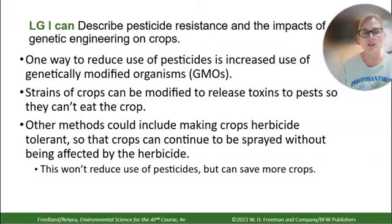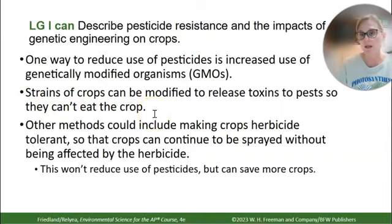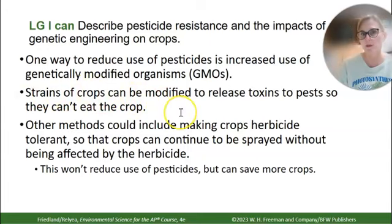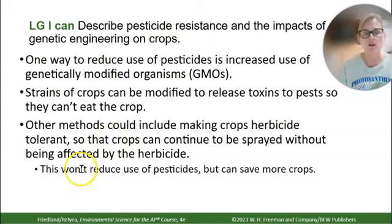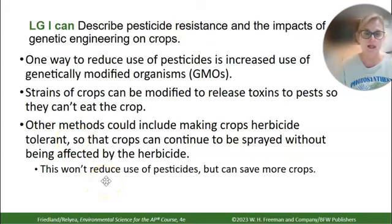One way to reduce pesticide use is through genetically modified organisms. Genes conferring pest resistance can be transferred from one plant species to another, allowing strains of crops to be modified to release toxins that deter pests from eating them. Another approach is making crops herbicide tolerant — known as Roundup Ready crops — so that herbicide can be sprayed on a field, killing weeds but leaving the crops unharmed. This won't reduce pesticide use overall but can save more crops.